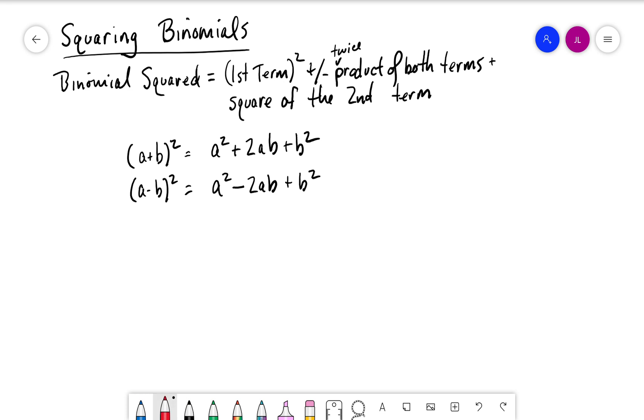To see how these work out, we put (a+b) times (a+b). This is (a+b)². a times a is a², a times b is ab, b times a is ab, plus b². So ab plus ab is 2ab, giving us a² + 2ab + b².